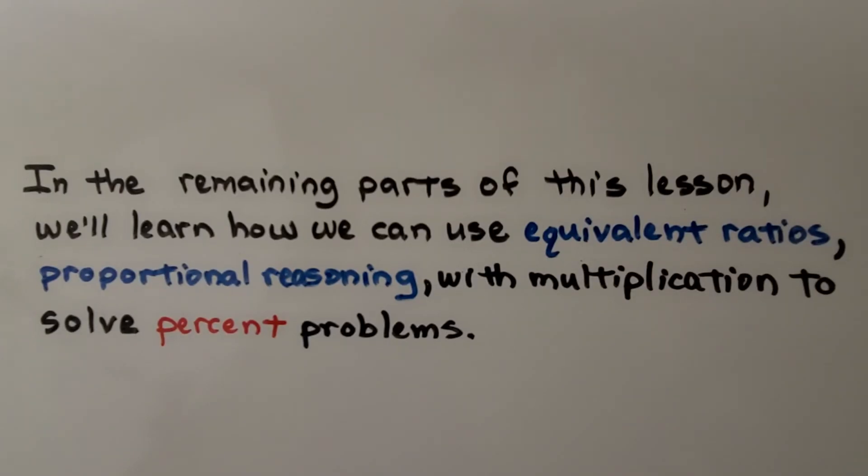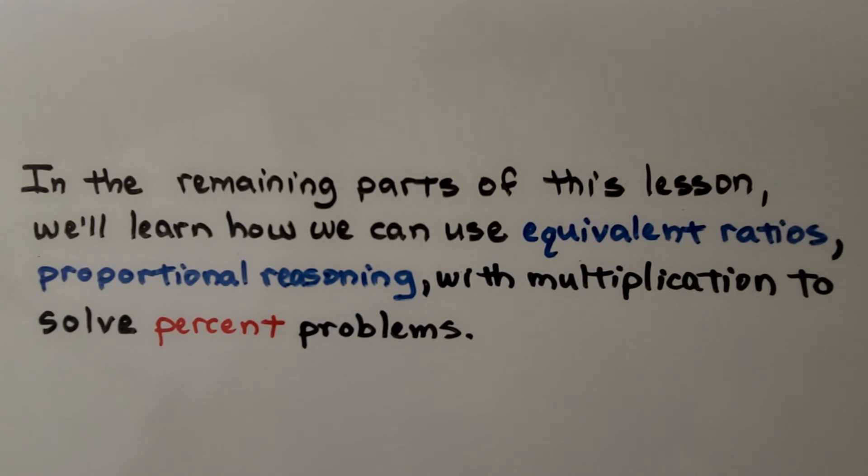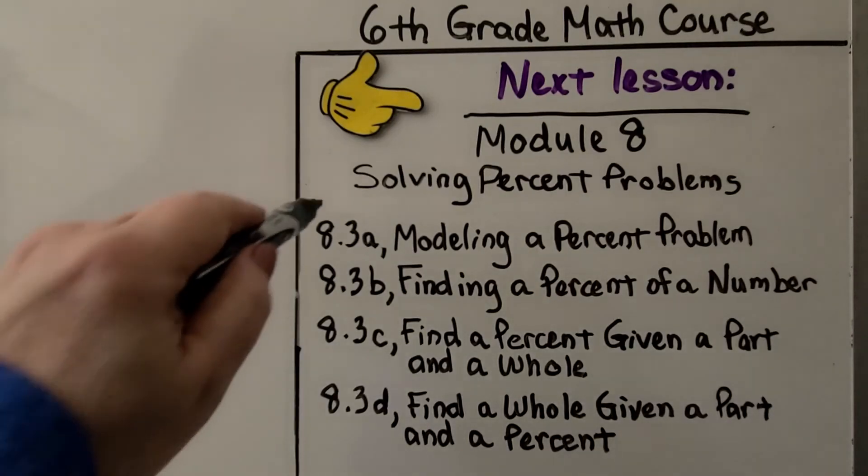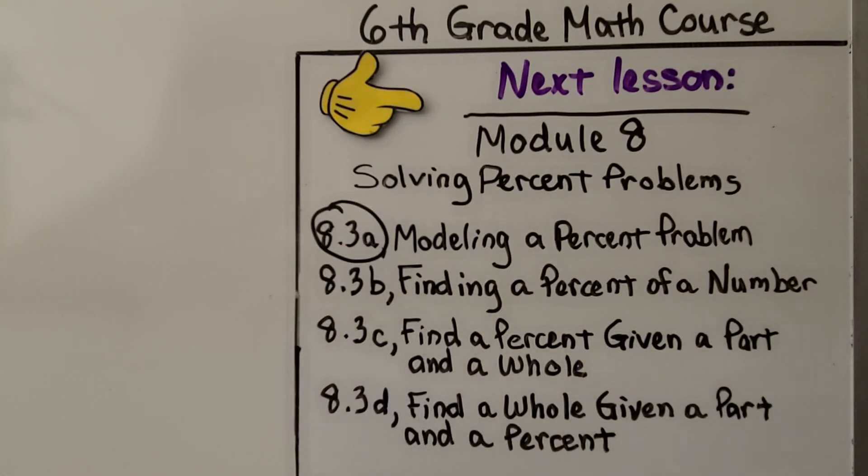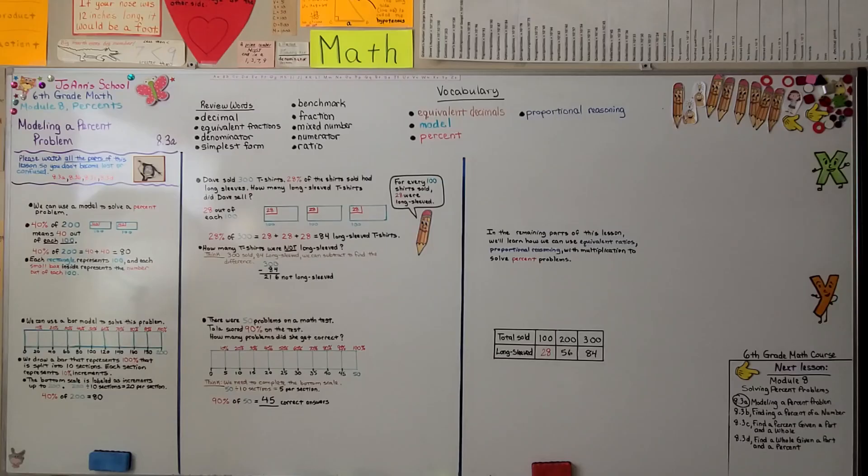So that's the first part of 8.3. In the remaining parts of this lesson, we'll learn how to use equivalent ratios and proportional reasoning with multiplication to solve percent problems. The next lesson is 8.3b, and we're going to be finding a percent of a number. I hope you're doing well, and I hope you'll join me for the next part of the lesson.